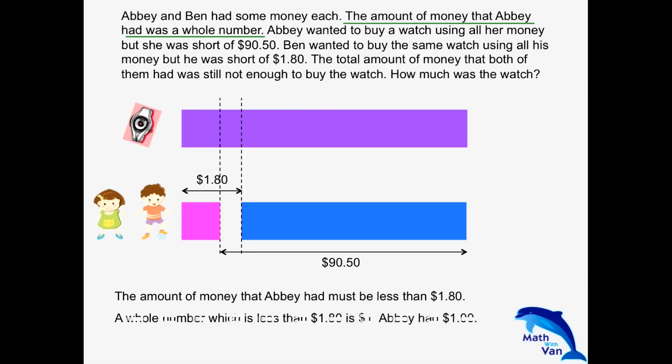Looking at the information again, we were told that the amount of money AB had was a whole number. Simple as that — the only whole number that is less than $180 is $1. So the cost of the watch is $1 plus $90.50. That's it.